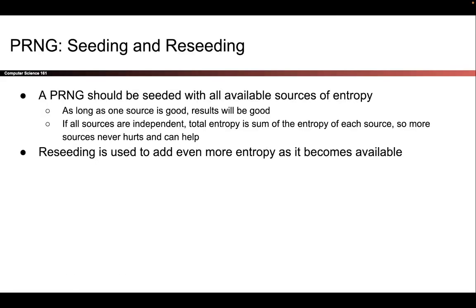A good PRNG should be able to take all sources of entropy you throw at it. If you give it a good source of entropy, an attacker who wants to predict your PRNG output has to guess that initial input entropy. But a good PRNG should also handle bad sources of entropy — for example, the output of a biased coin has low entropy, but it should still help. Even if you pass in a source with no entropy at all, like always passing in one, that should not make the PRNG worse.